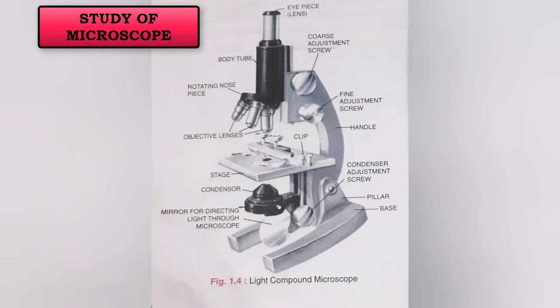The revolving nosepiece, also known as the turret, holds about 2 to 4 objective lenses and allows rotation of the lens while viewing. Next is the arm of the microscope. It is used for holding the microscope, supports the tube of the microscope, and connects to the base of the microscope.